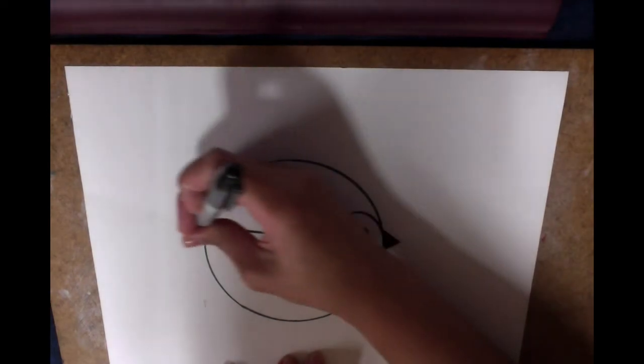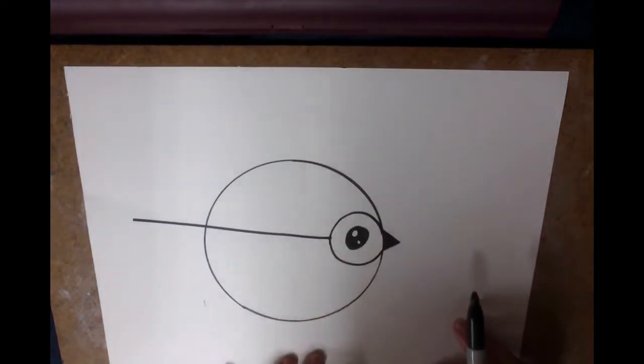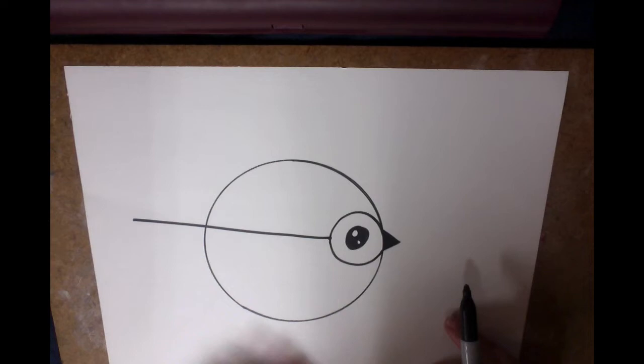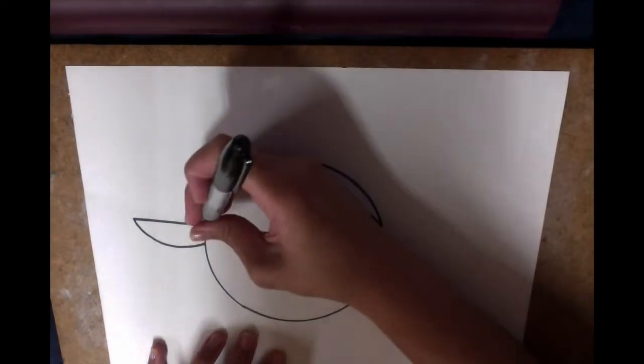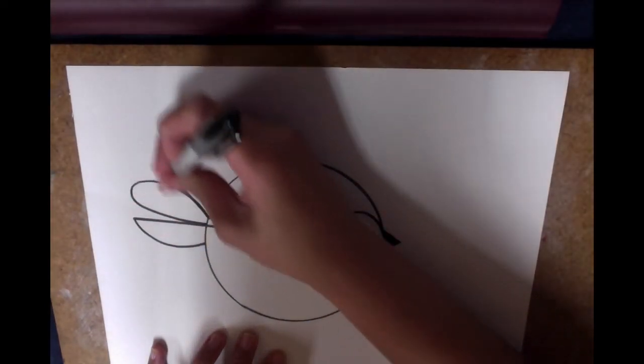Now add a line that goes all the way from the edge of that loop to the outside of your little bird's body. This is going to be the start of the tail. From that line I just drew, I will draw a curve to create a back tail feather, and maybe I'll add a couple of extra.